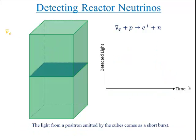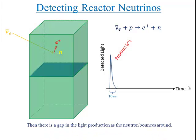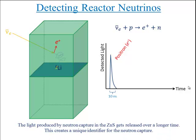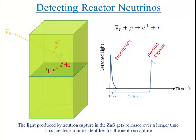The light from a positron emitted by the cubes comes as a short burst. Then there's a gap in light production as the neutron bounces around. The light produced by neutron capture in the zinc sulfide gets released over a longer time. This creates a unique identifier for the neutron capture.